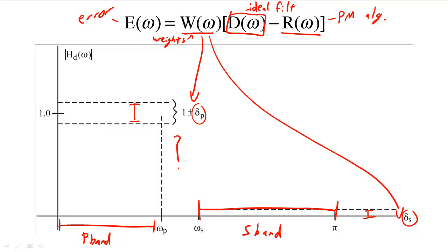As it turns out, the error is minimized if the ripples in the passband are the same size and all the ripples in the stopband are the same size.